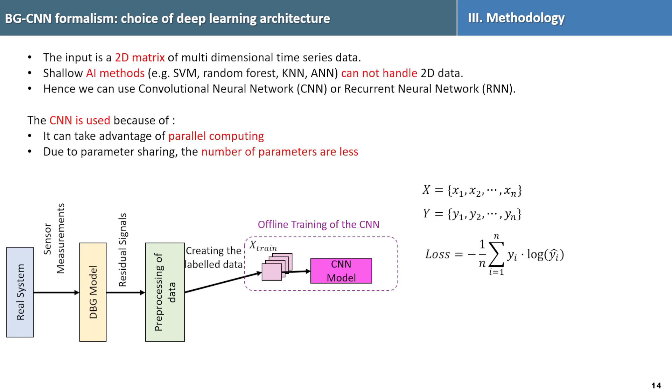Following this, the residual signals undergo pre-processing through window length segmentation. In sliding window segments, we then normalize the signals, creating a set of labeled data. This labeled data is utilized to train the CNN model in the offline phase where X represents the multi-dimensional time series input data and Y corresponds to the fault labels. The model is trained using categorical cross-entropy loss function.